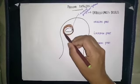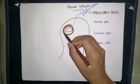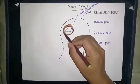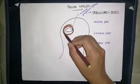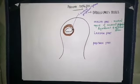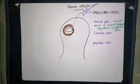So these are the concentric fibers which form the orbital part of orbicularis oculi. The fibers originate from the medial aspect of the medial palpebral ligament, wind around the orbit, and return to the same point to get inserted there.